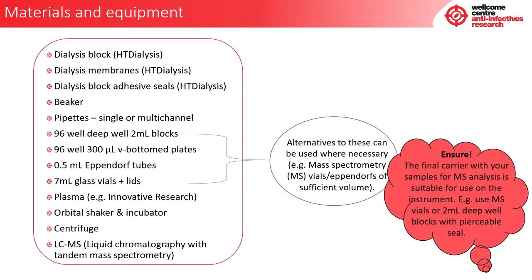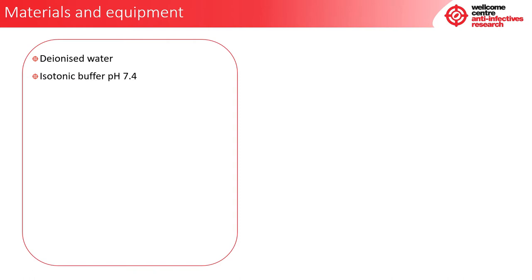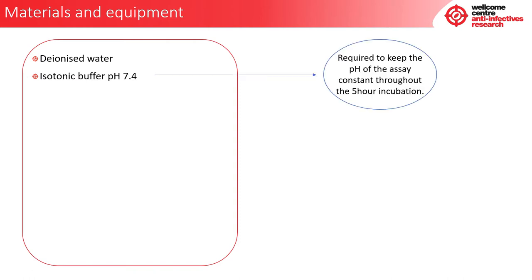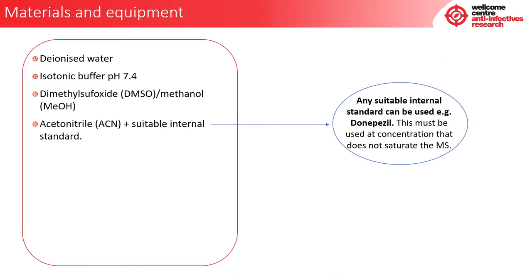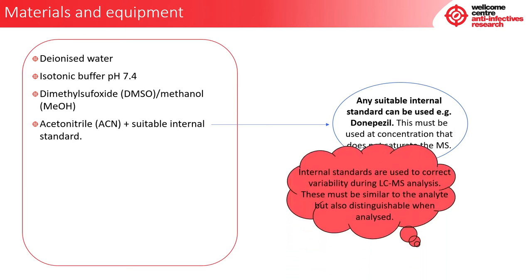Ensure that the final carrier with your samples for MS analysis is suitable for use on the instrument — for example, use MS vials or 2 ml deepwell blocks with a pierceable seal. You will also need deionised water, isotonic buffer at pH 7.4 (required to keep the pH of the assay constant throughout the 5-hour incubation), dimethyl sulfoxide or methanol, and acetonitrile plus a suitable internal standard. Any suitable internal standard can be used, for example, donepezil, at a concentration that does not saturate the MS. Internal standards are used to correct variability during LC-MS analysis and must be similar to the analyte but also distinguishable when analysed.